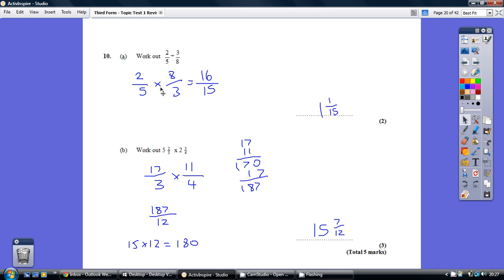It's no longer 3 over 8, it's 8 over 3. It's then one of the easy multiplications, top times top, bottom times bottom, 16 over 15, which is 1 and 1 15th.